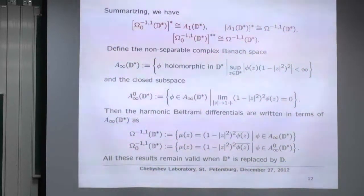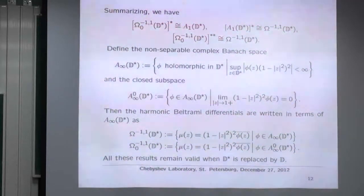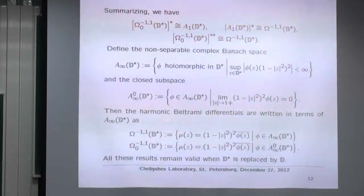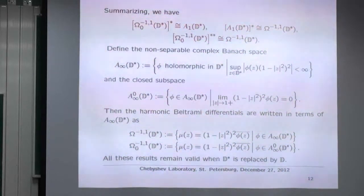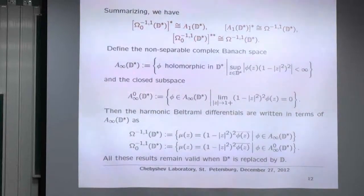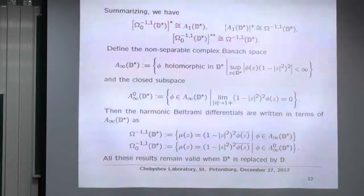To summarize: we have various isomorphisms — this is a Banach space isomorphism, and the bidual is this space. These are non-reflexive spaces. I also need an A∞ version: holomorphic in D* such that the supremum relative to the Poincaré measure is finite. The space Ω⁻¹·¹ plays a major role. A little lemma says that μ(z) equals this measure factor times φ(z̄), where φ is in A∞(D*).